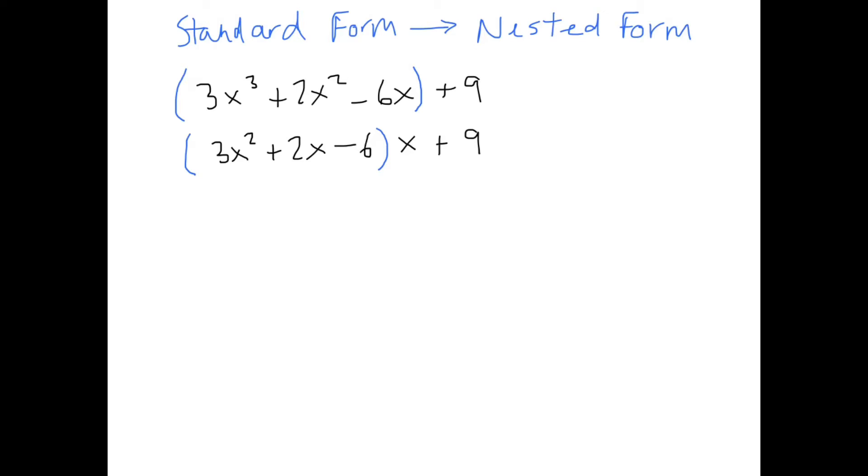Now, we want to take a look at these two terms. Again, they both have an x in common, so we can factor out an x from each of them. That will leave us with 3x plus 2 times x, still have the minus 6, and then we still have that multiplied by x, and then plus 9.